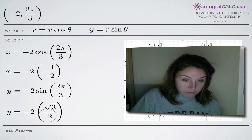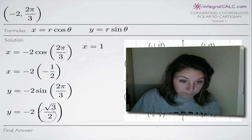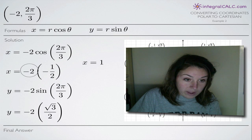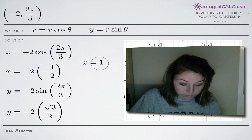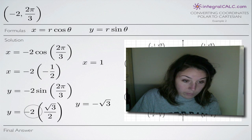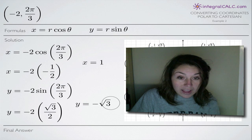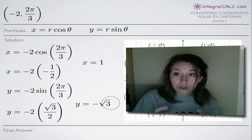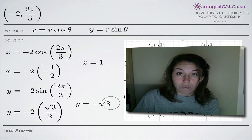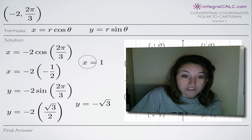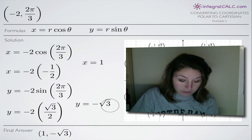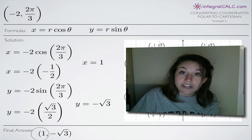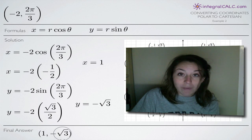We've substituted both values and now we simplify. Negative 2 times negative 1/2 — the negatives cancel and the 2's cancel — giving us x equals positive 1. For y, negative 2 times square root of 3 over 2, the 2's cancel giving us y equals negative square root of 3. So our final Cartesian coordinates are 1 comma negative square root of 3.